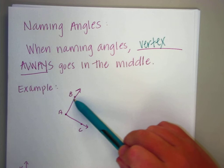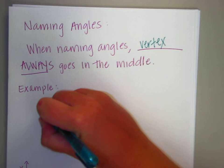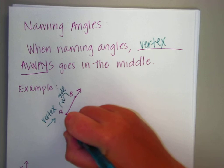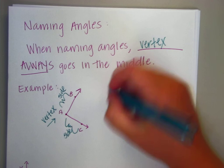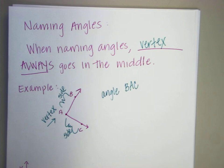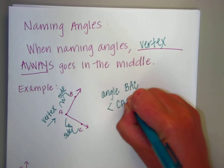So in this you have A, B, C. Your A is your vertex. This is a side and this is a side. So you would name this angle angle BAC because vertex always goes in the middle, or angle CAB.